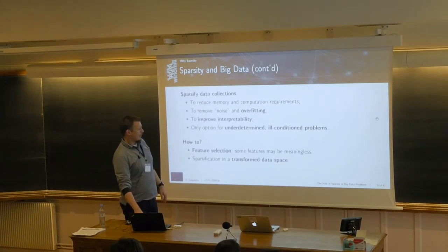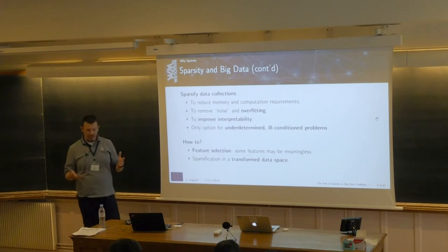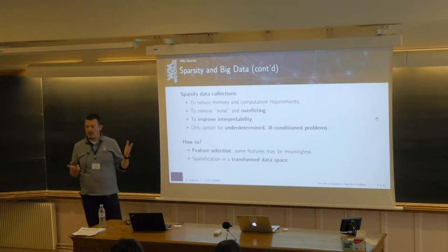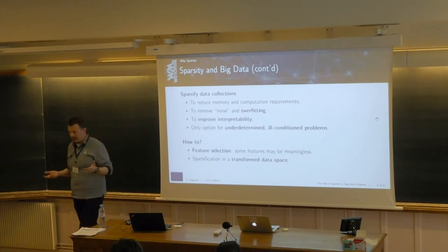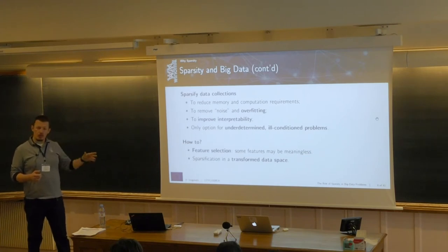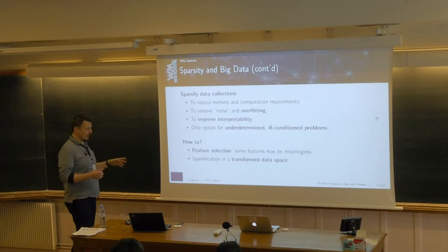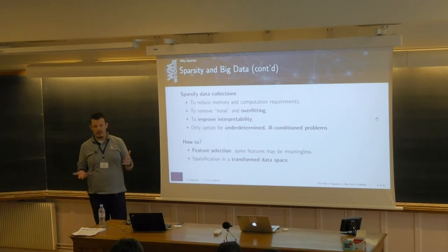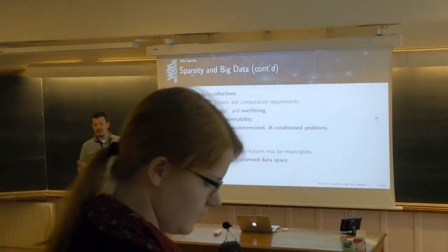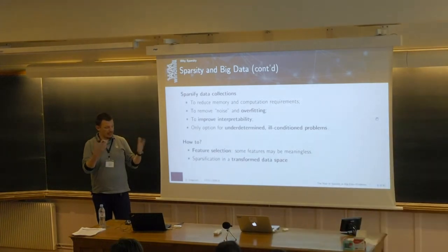In underdetermined or ill-conditioned cases, we need extra constraints to find a solution, and sparsity is one of those tools. To recap: given a dataset, we have two possible approaches — the first and easiest is feature selection, discarding features that are not needed. The second approach, which I'll cover with examples now, requires transforming the data space as we did with the image, to find a representation where sparsity makes sense.